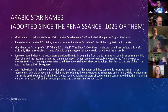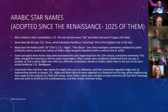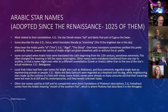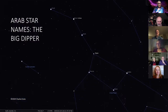Local Arab tribes had their own names for bright stars like Aldebaran, commonly regarding single stars as animals or people — Alpha and Beta Ophiuchi were regarded as the shepherd and his dog, while neighboring stars made up a field with sheep. Some Arabic names were so old their meanings were lost even to al-Sufi, and remain unknown today. Other names used by al-Sufi were direct translations of Ptolemy's descriptions — for example, Fomalhaut means 'from the mouth of the southern fish,' exactly where Ptolemy had described it in the Almagest.